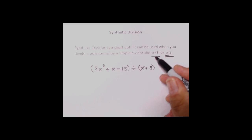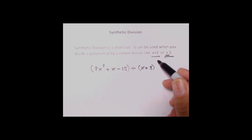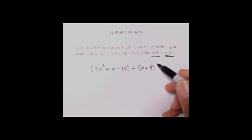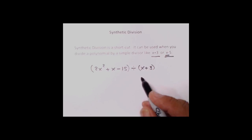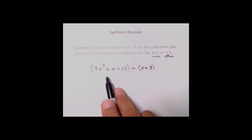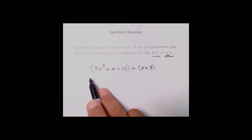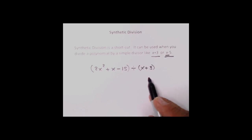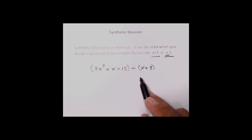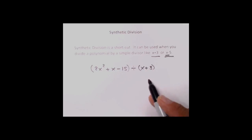So if you have something like x plus, what you've got to do is split the plus up into two minuses so you get the correct starting number. Let's give you an example: 2x squared plus x minus 15 is our polynomial, and we're dividing it by x plus 3. We notice that we have a plus 1 in front of our x, so we can use synthetic division. But we have to handle the plus first.